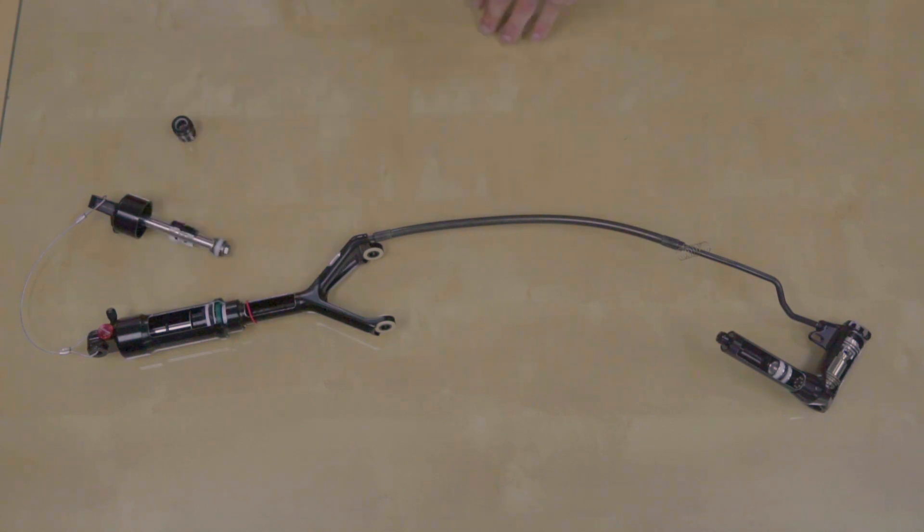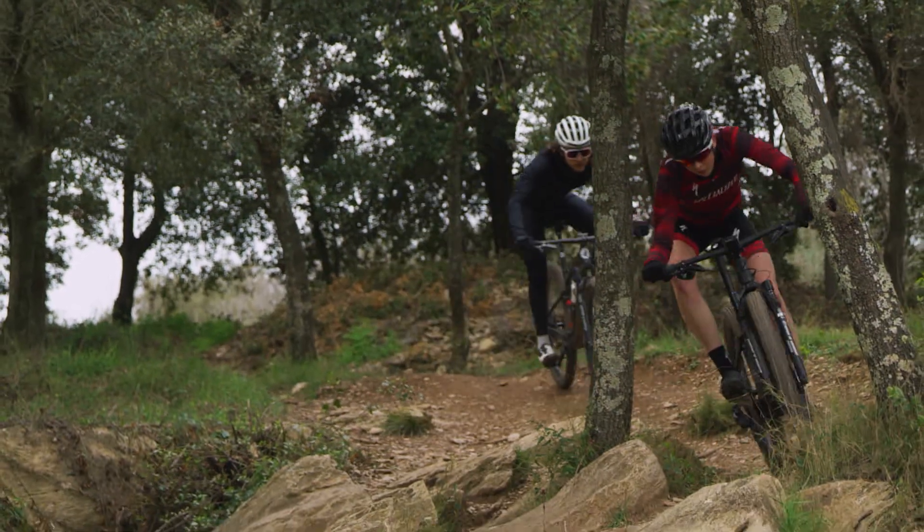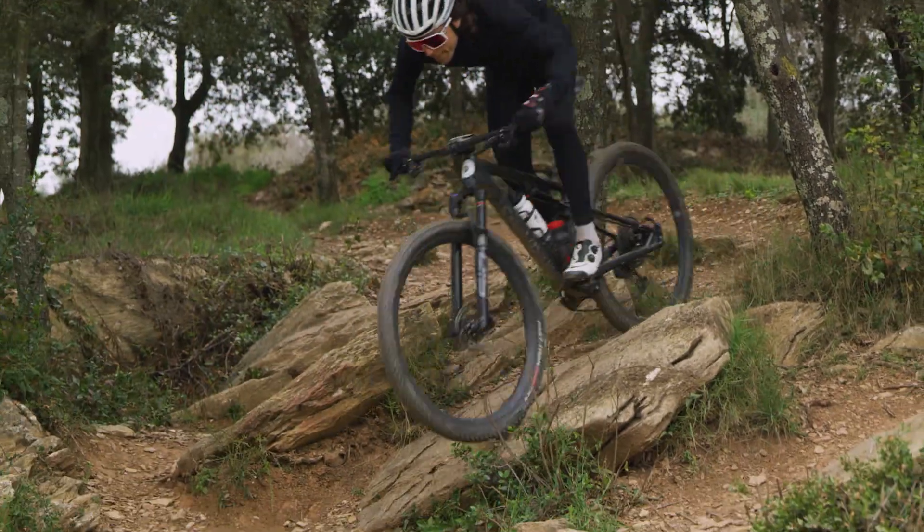So also getting away from that, we lose a little bit of weight, which is always positive in the cross country world. We were able to move the transfer port around and actually make a little bit larger negative spring. We also add a tuning feature where there's a negative tuning spacer in there. So the consumer at a good shop level can actually manipulate the air spring a little bit. Better air spring performance and more tunability and lighter weight with that.